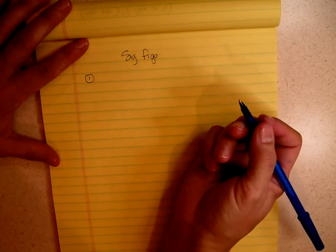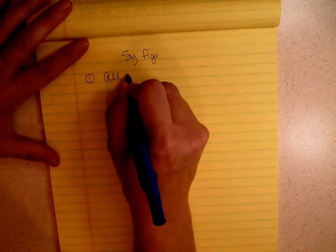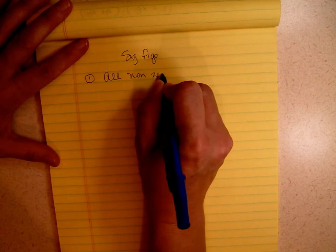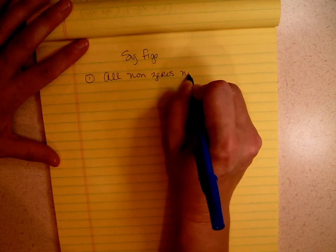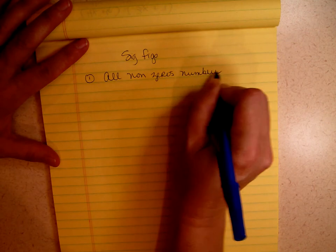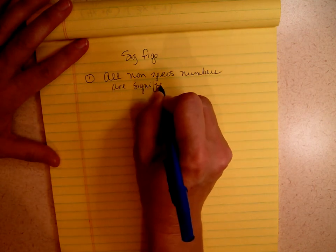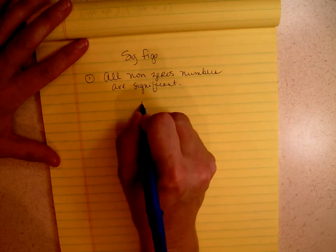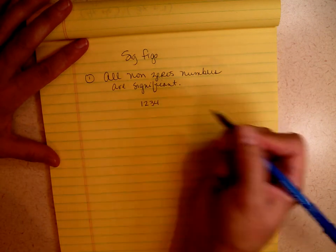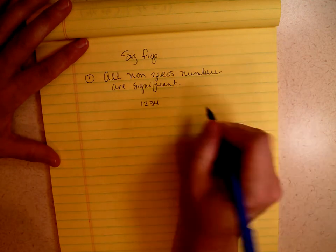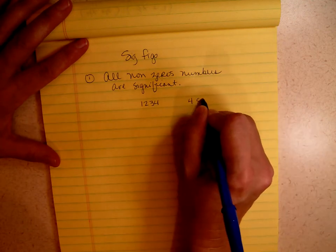The first rule for significant figures is that all non-zero numbers are significant. So what do I mean by that? I mean that if we have the number 1234, they're all non-zeros, they're four sig figs.